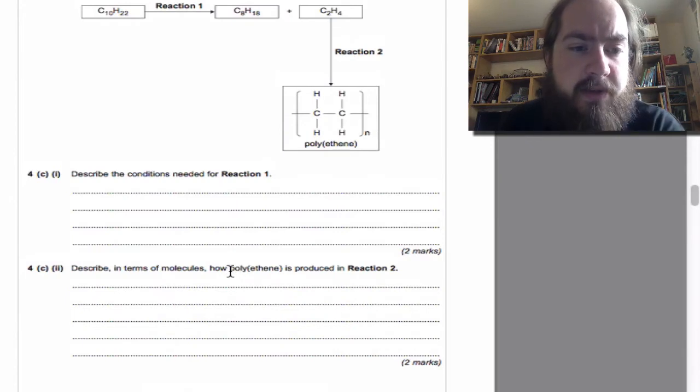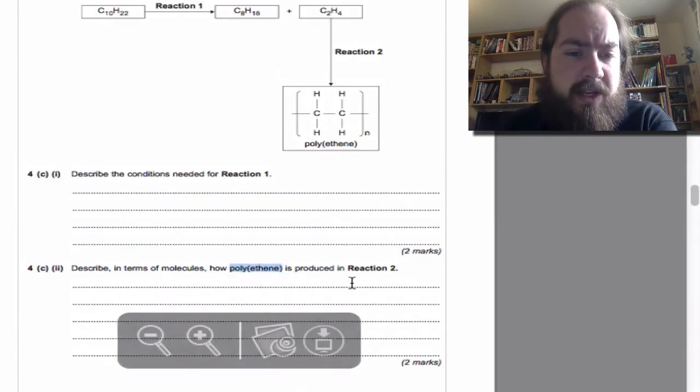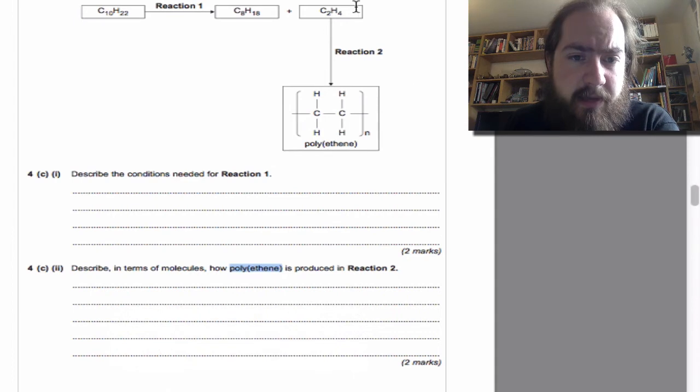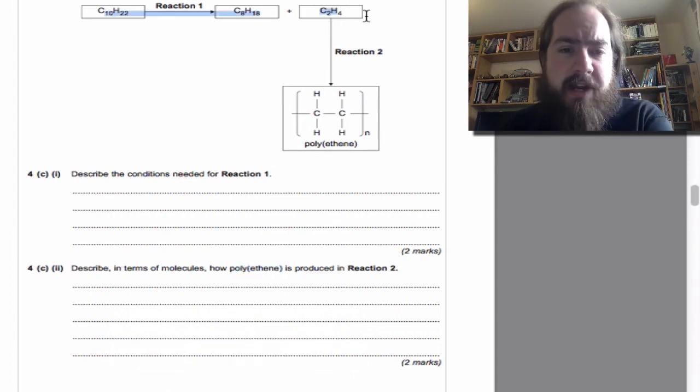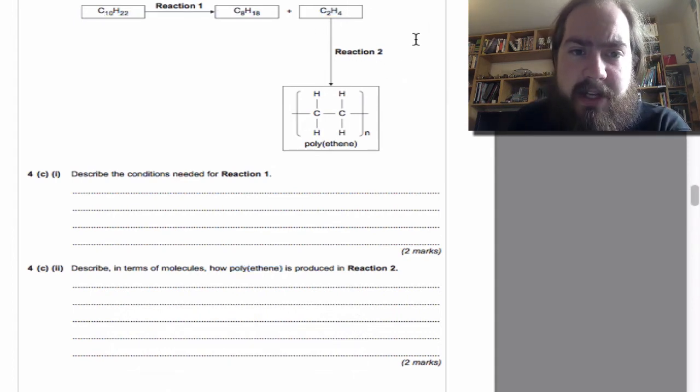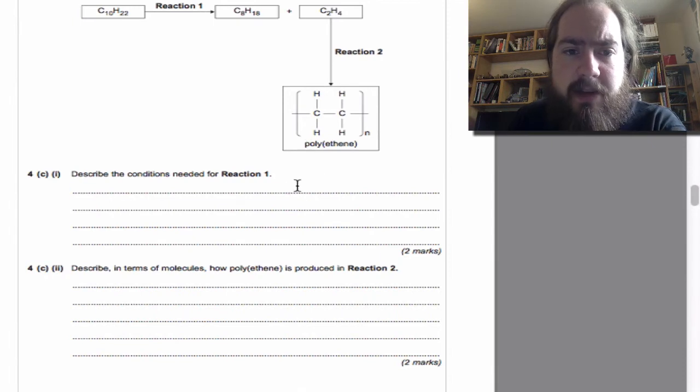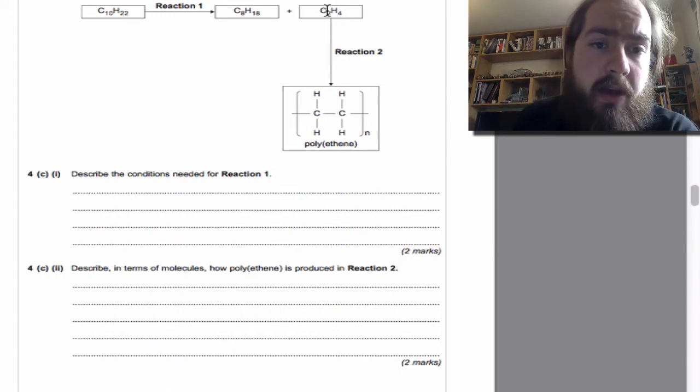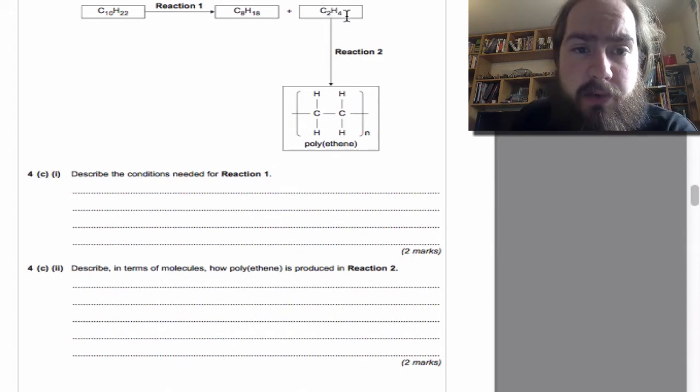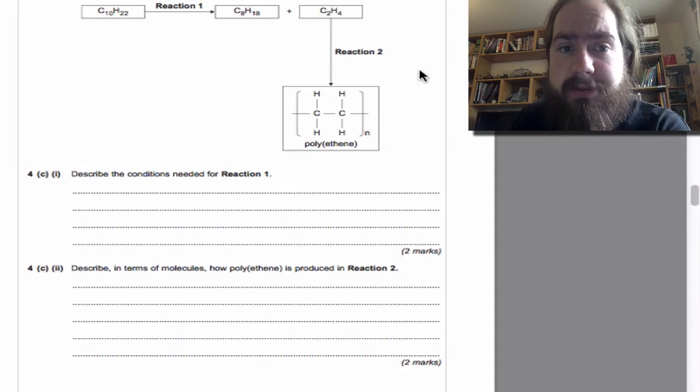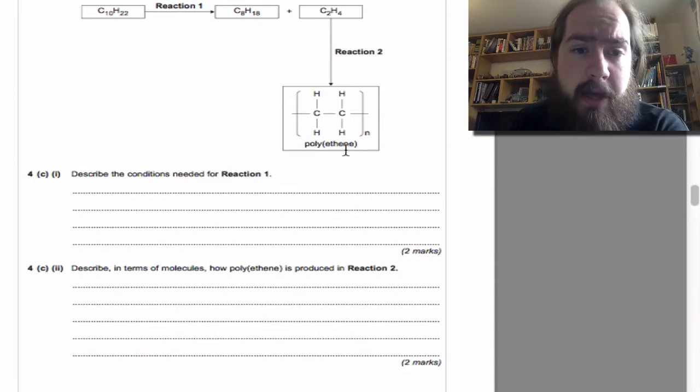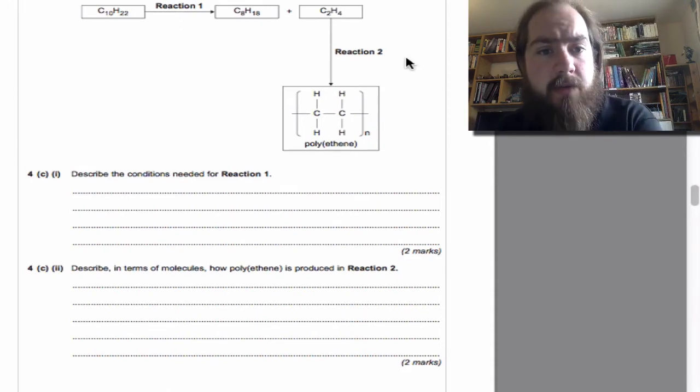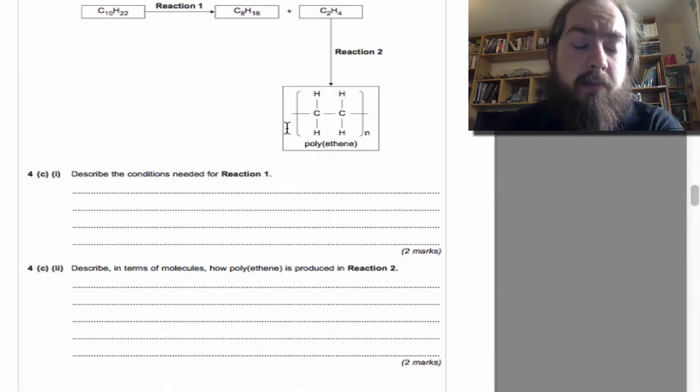For C part two: Describe in terms of molecules how polyethene, that's the plastic here, is produced in reaction two. When we take something like ethene and make polyethene, that's a reaction called polymerization. Polymerization is when we take the small monomers—so ethene here is a monomer, think of a paperclip—and we put lots of them together into a long chain to make a polymer. Polymer meaning many, so that could be your paperclip chain.